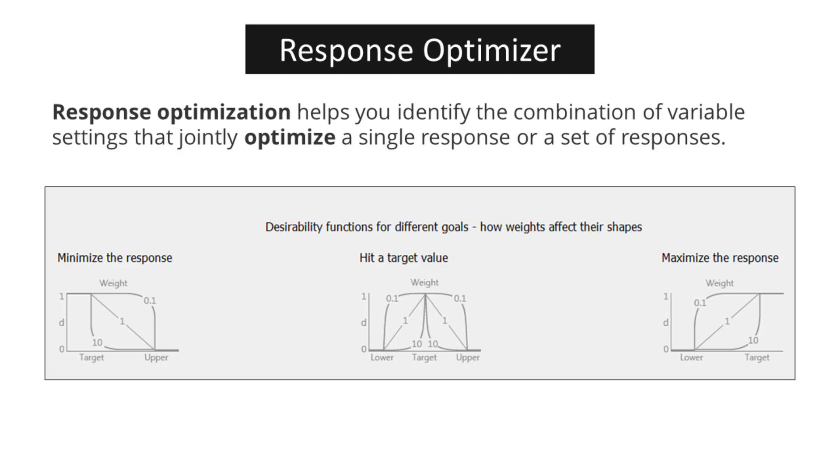Response optimization, also referred to as parameter optimization, plays a vital role in various fields such as engineering, science, and business. It involves the systematic exploration of different variable settings to identify the combination that maximizes a single response or a set of responses.